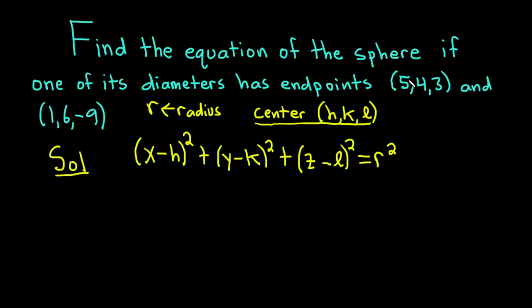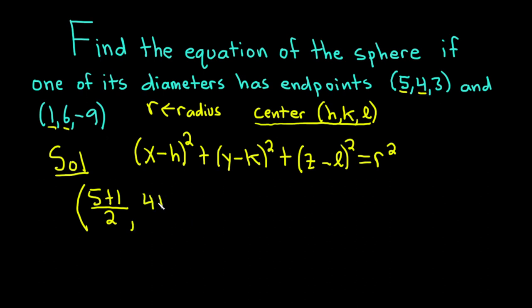To find the midpoint between these two points, you just add the coordinates and divide by 2. So we add 5 + 1 and divide by 2 for the x-coordinates, then 4 + 6 and divide by 2 for the y-coordinates — we're basically averaging the coordinates — and then 3 + (-9) and divide by 2 for the z-coordinates.